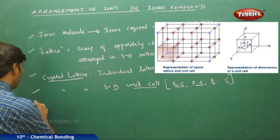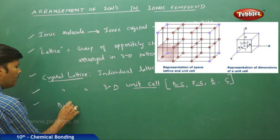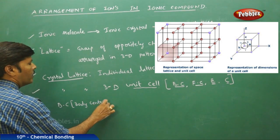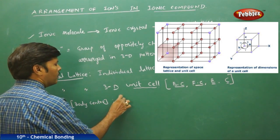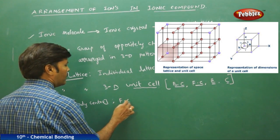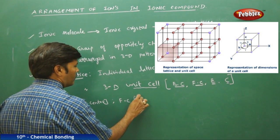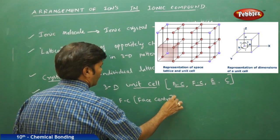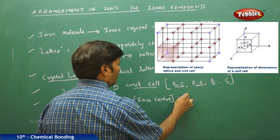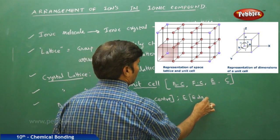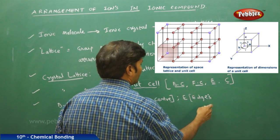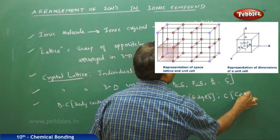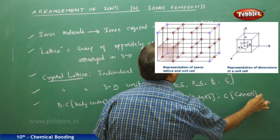To recap, the four types of lattice points are: BC for body center, E for edges, and C for corners.